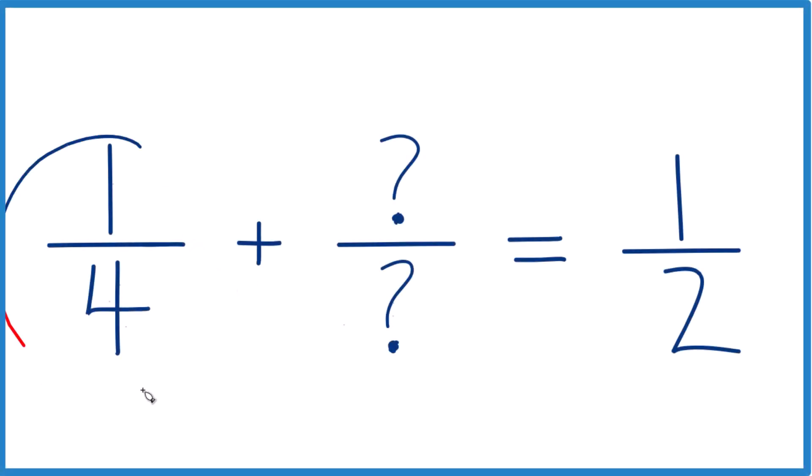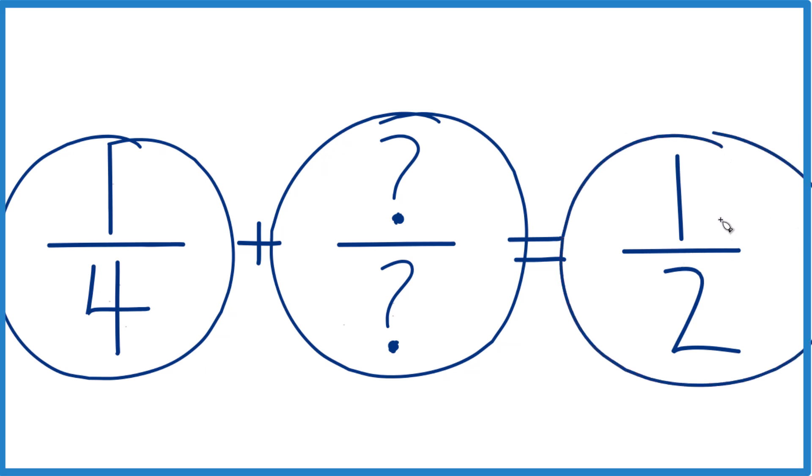So I was asked to figure out one-fourth plus some number here equals one-half. How can you do that? Here's the way I would approach it.